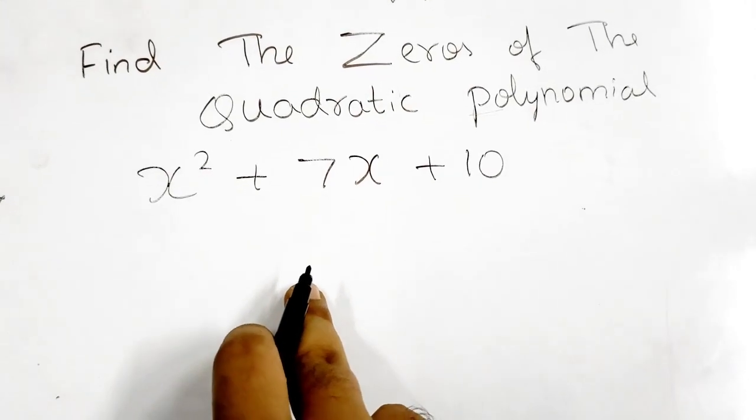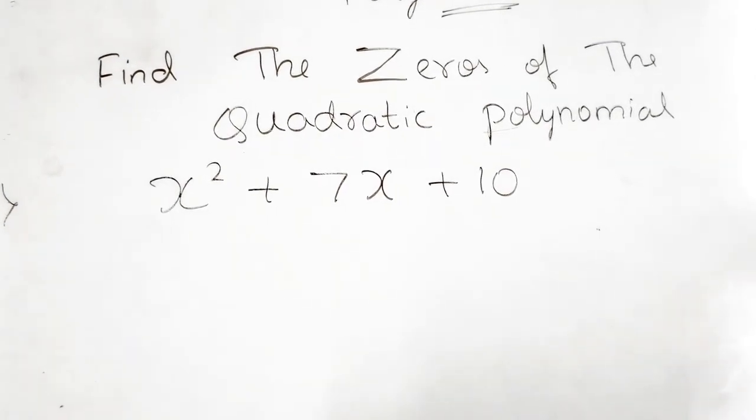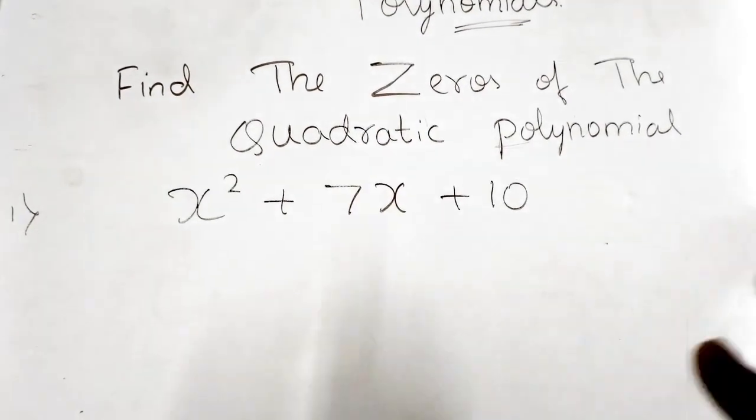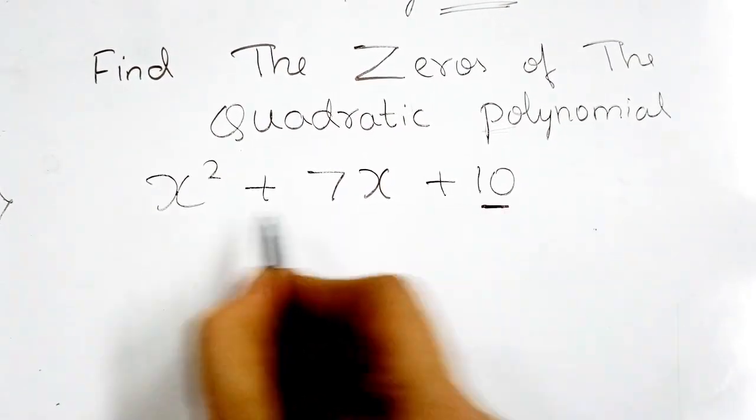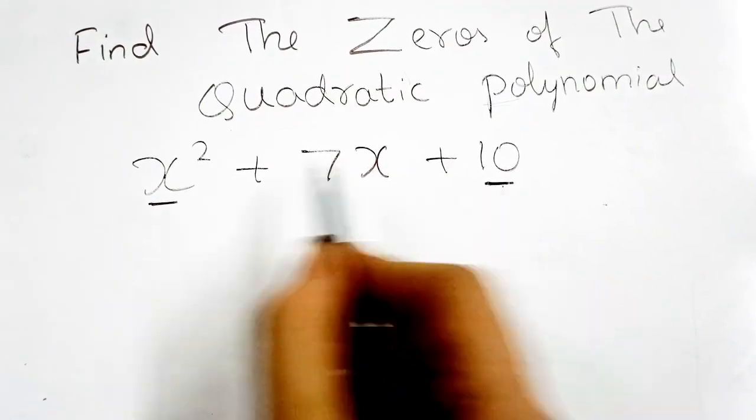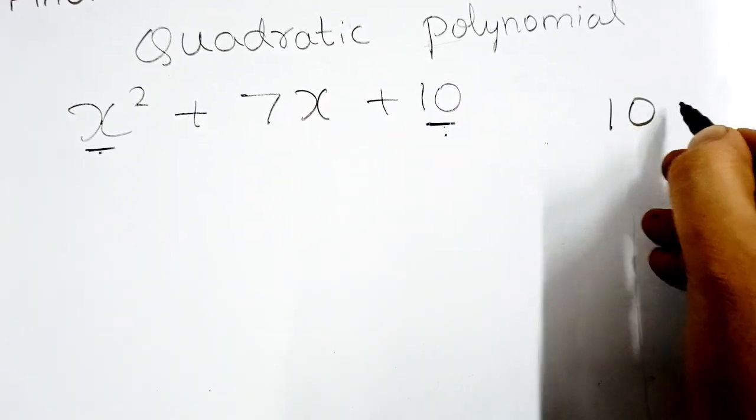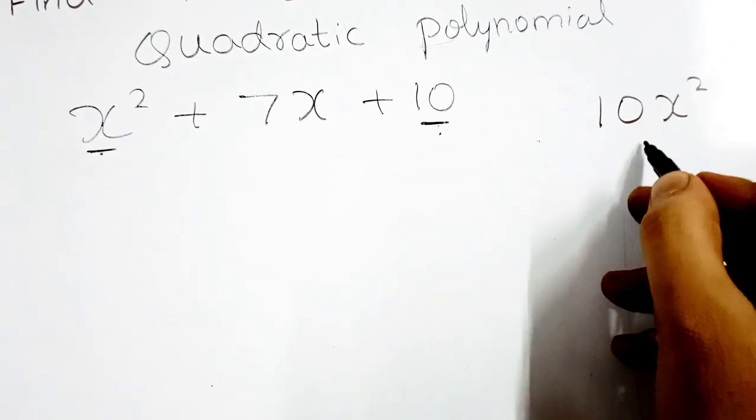Even though this is a quadratic polynomial, you cannot use the formula. We have to do factorization. In the factorization method, listen properly. First step is: multiply this last term and first number.